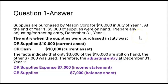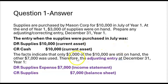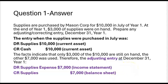How do we know that entry was made? Well, it didn't tell us that they made any errors recording that original entry. So we have to assume that in July when the supplies were purchased, the right entry was made — a debit to the current asset supplies and a credit to cash for the full amount of $10,000. The facts indicate that only $3,000 of the $10,000 are still on hand; the other $7,000 must have been used. Therefore, the adjusting entry December 31st, year 1, should be a supplies-expense debit and a credit to supplies.